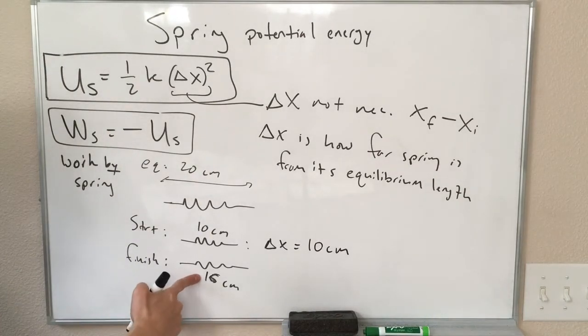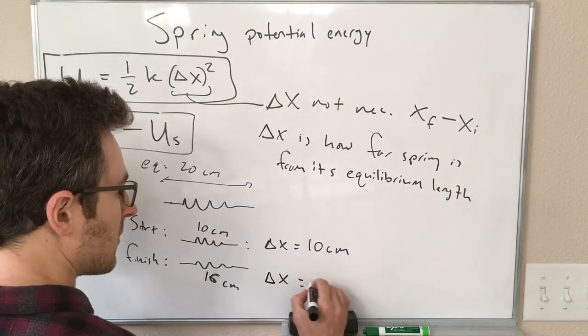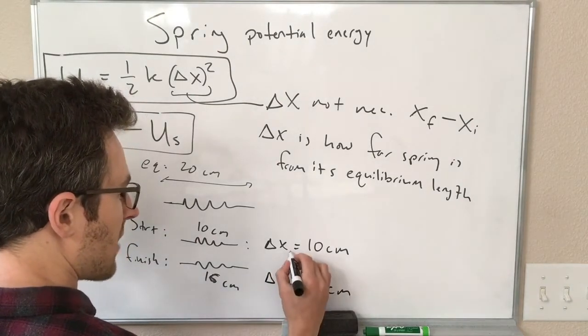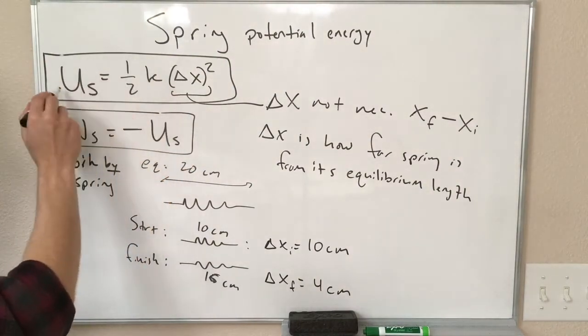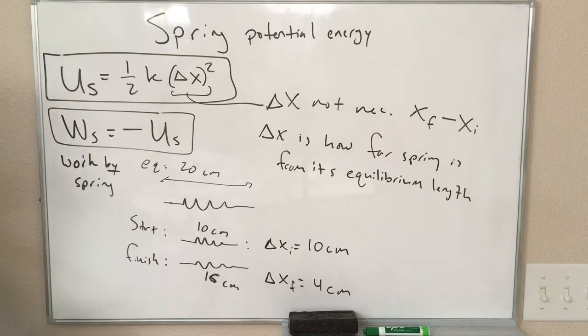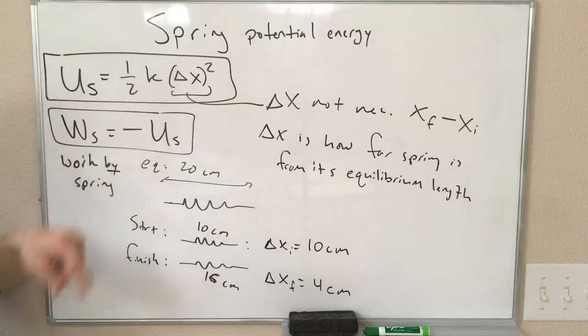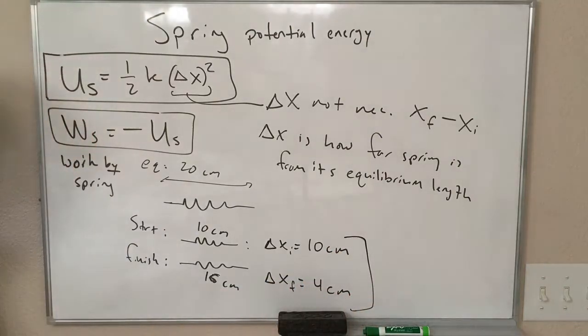And for the finish, let's say 16 centimeters, delta x is how far is this from equilibrium? That is 4 centimeters. So we actually have like a delta x initial and delta x final that go into this equation because we can have a potential energy that's different at the beginning and at the end. So this is kind of an odd use of delta x. This is not the same as in kinematics, and this is something that trips people up.